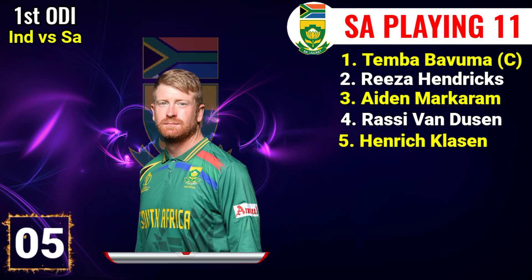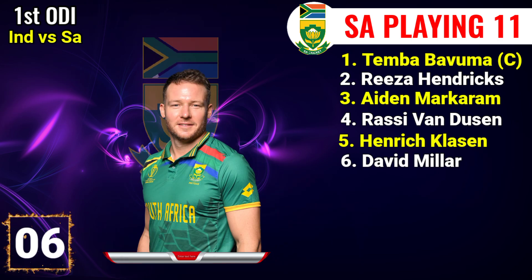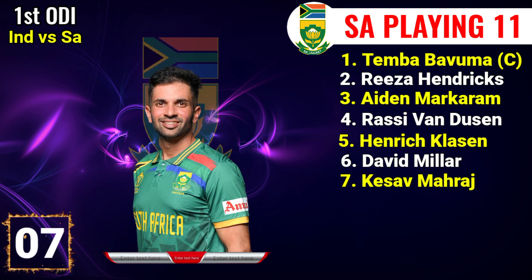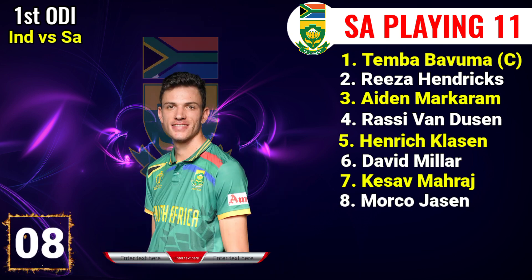No.4 Rassie van der Dussen, right-hand batsman. No.5 Heinrich Klaasen, right-hand batsman. No.6 David Miller, left-hand batsman. No.7 Keshav Maharaj, right-hand all-rounder. No.8 Marco Jansen, left-arm all-rounder.